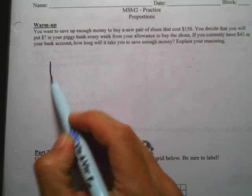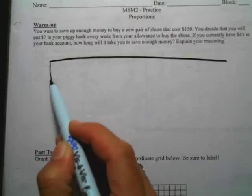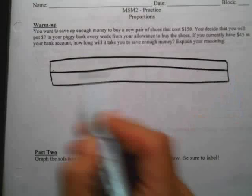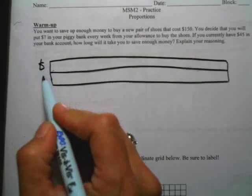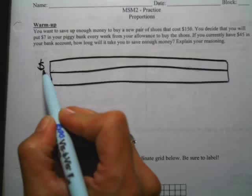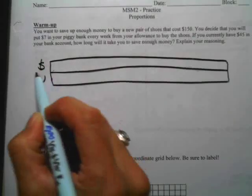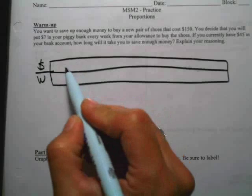All right, so let's set up our ratio table. I'm just going to set up a table like this, divide it in half, and then we'll call this money on top. And it doesn't matter the way you set it up. Money could be on the bottom or the top. And then this one's going to be weeks. So that's how I'm going to set up my ratio table.